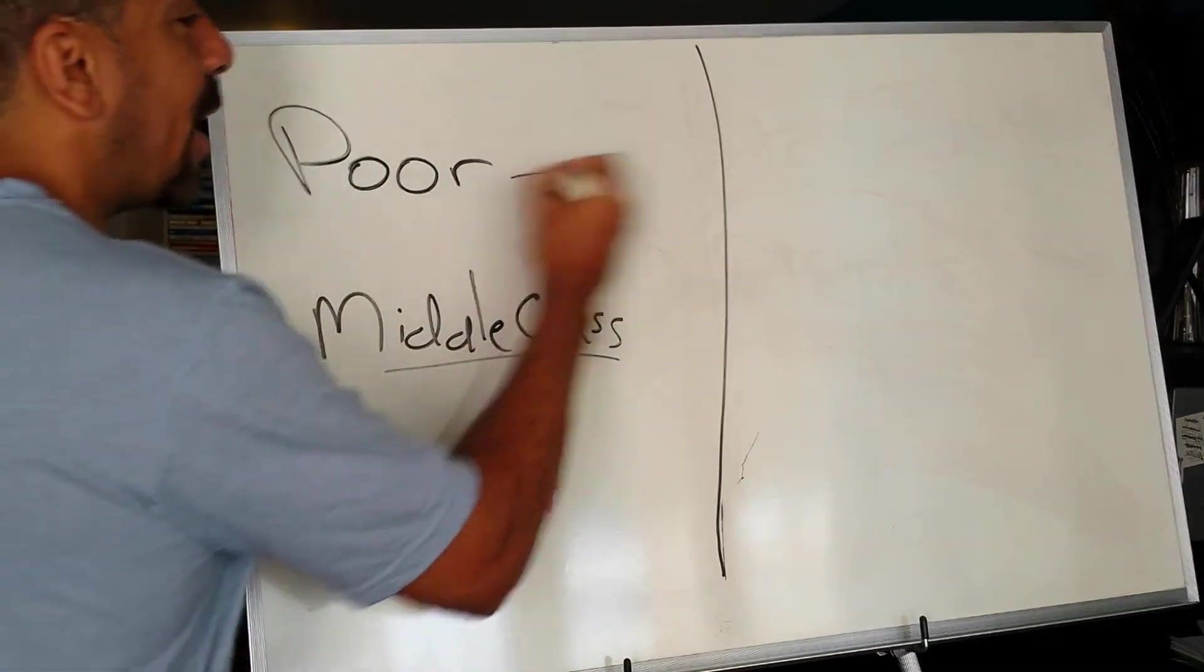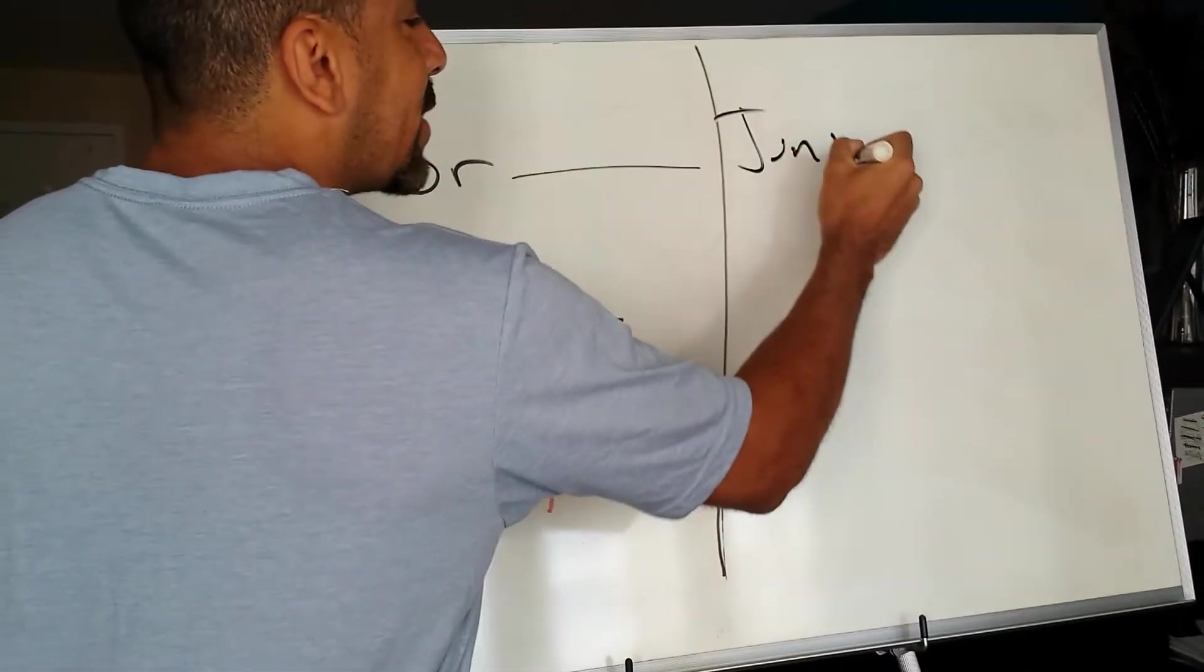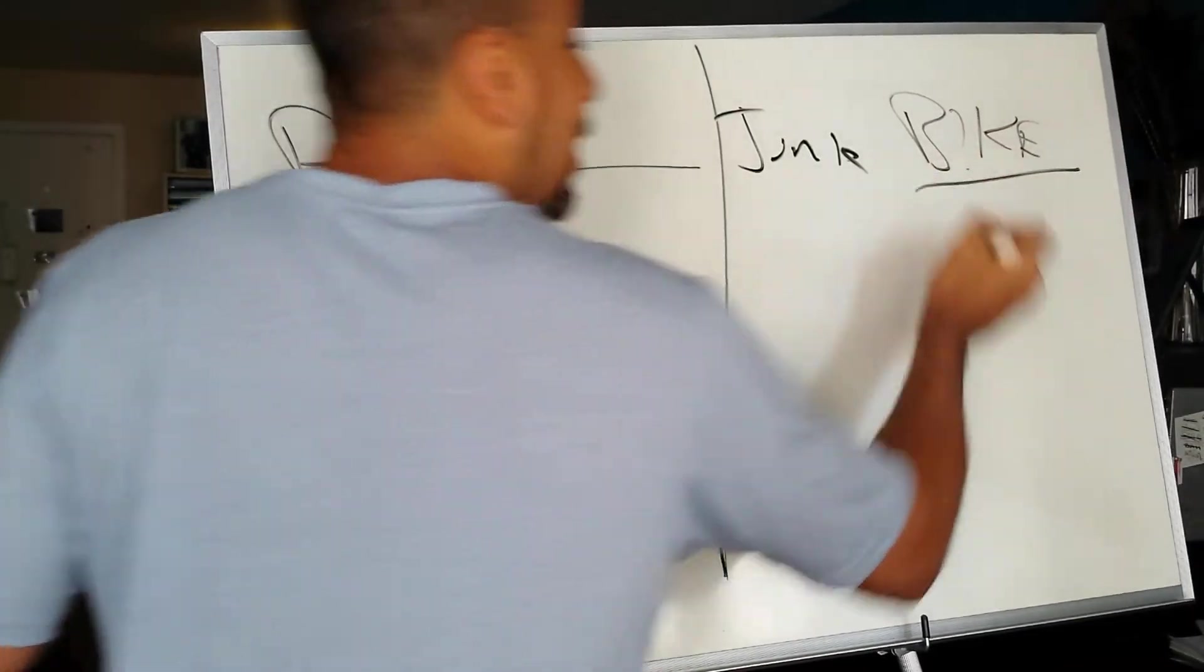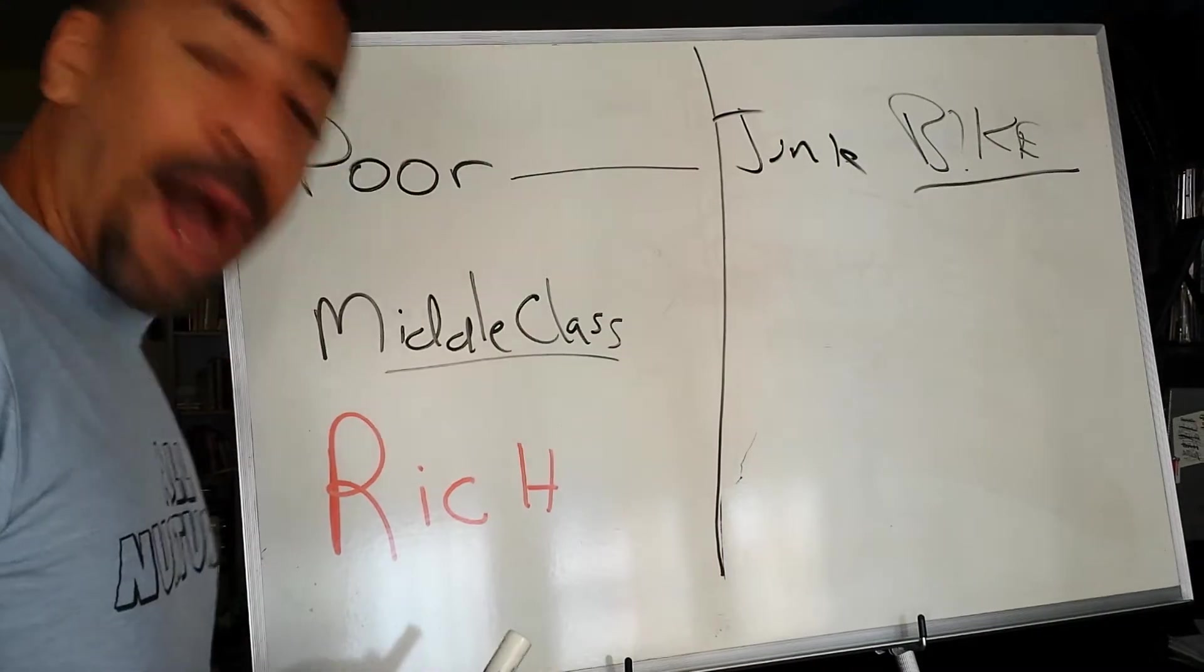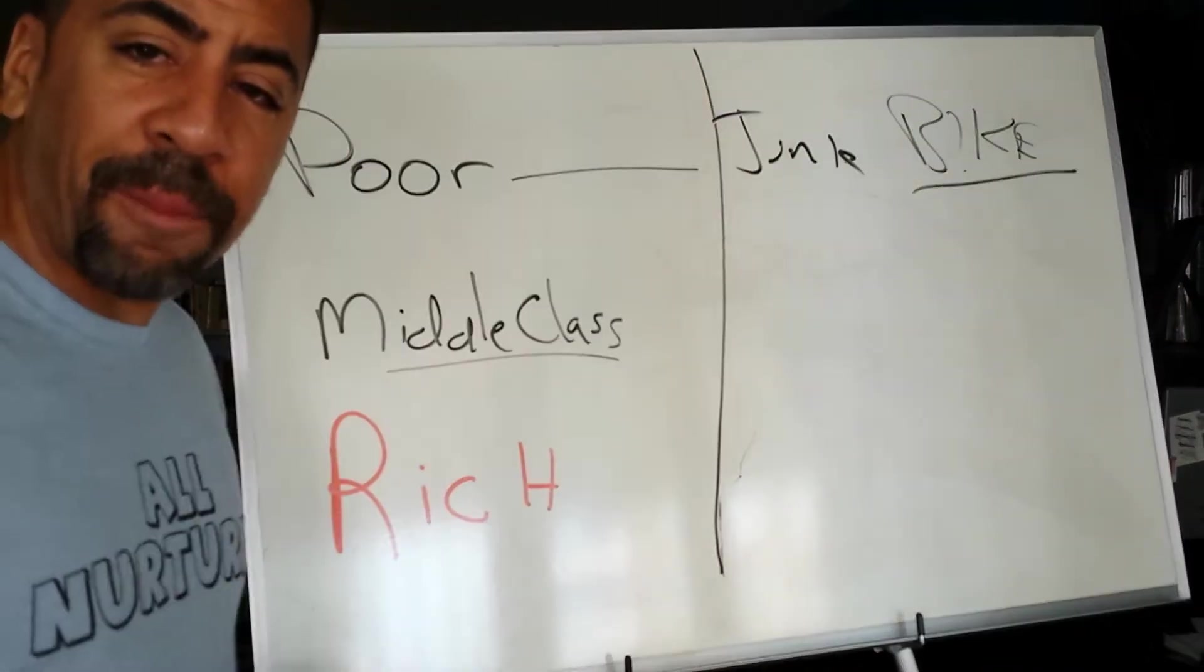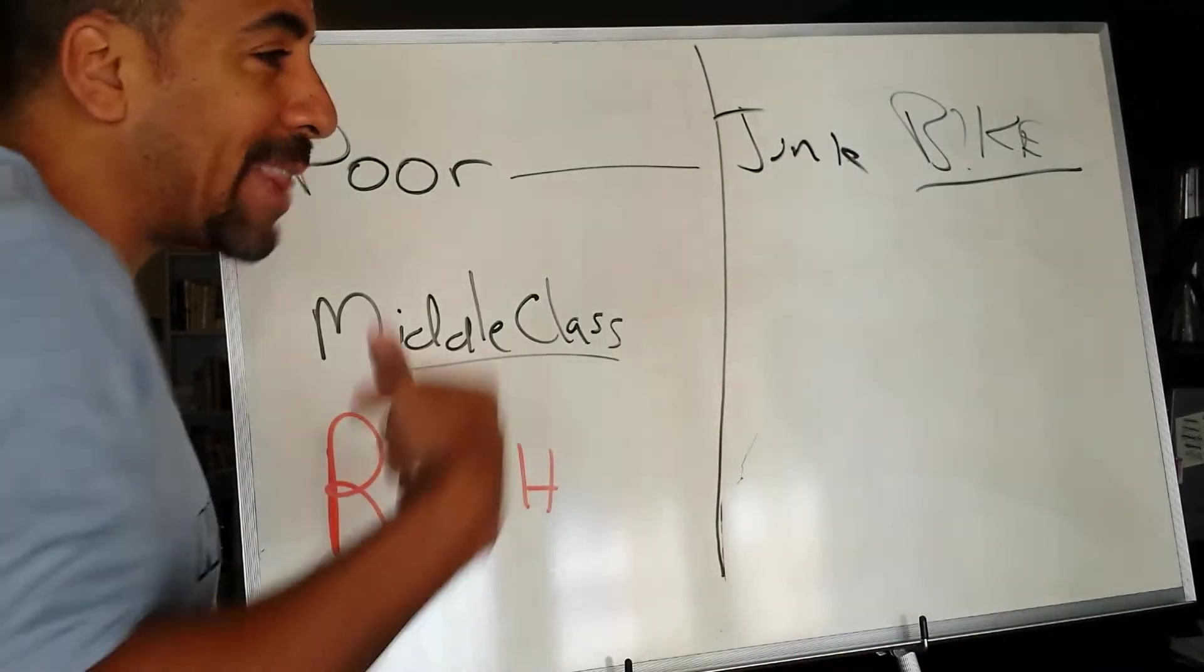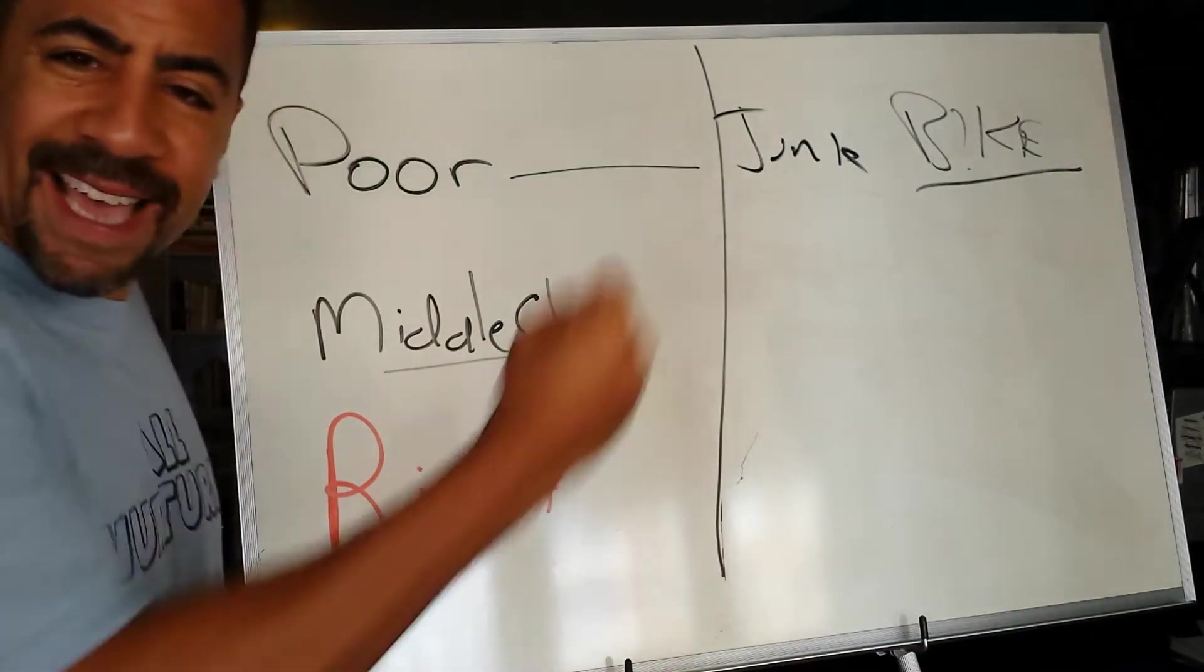So the poor people, they might go out and buy a bunch of junk. In this case, we're going to talk about a bike. Everybody wants a bike, and what the poor people do, they'll go and buy a bike. They'll take all the money, spend it on a bike, and then have nothing left. They might buy it at Walmart, or at the dollar store, or something like that. But man, they got a bike.